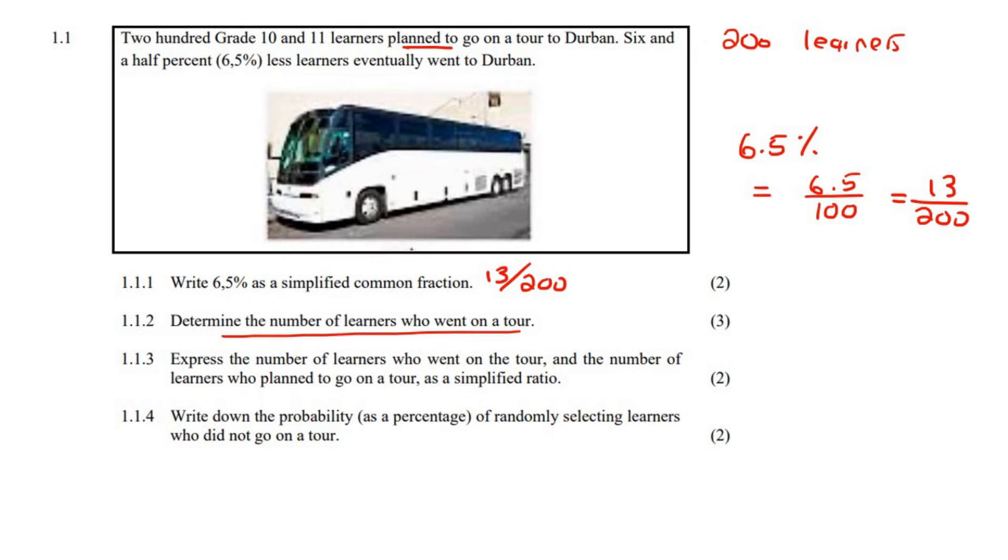Next question, determine the number of learners who went on the tour. Now, there's many ways that you could do this one. You could say, let's take this away quickly. So what you could do is, here's the first option. You could say, what is 6.5 percent of 200? And then remember that of means multiply. If you type 6.5 percent in your calculator, then it's actually 0.065 multiplied by 200. Go ahead, calculate that, and that'll be 13.